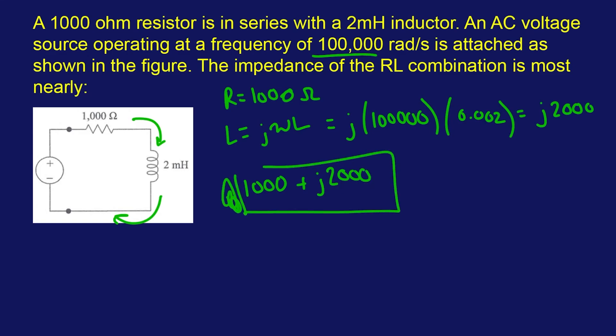Almost wrote a square root sign. That's the impedance of this simple RL combination circuit. Before you guys comment, it's actually j1200 - I got it, don't worry, I did the math right, trust me.